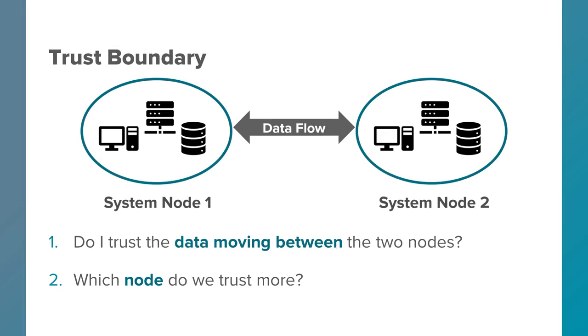Ask: first, do I trust the data moving between the two nodes? And next, is there a different level of trust that I place on either of these two nodes? In other words, which node do we trust more?